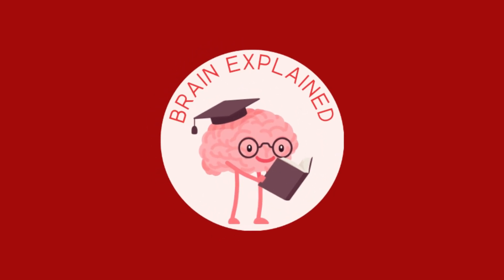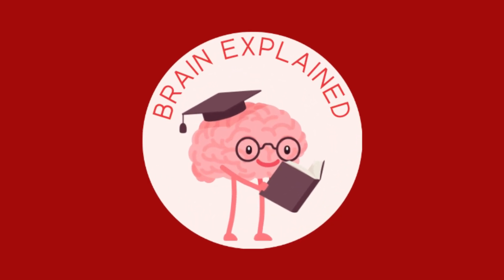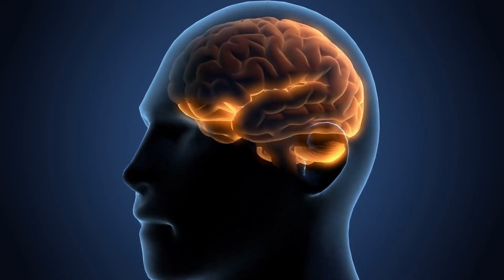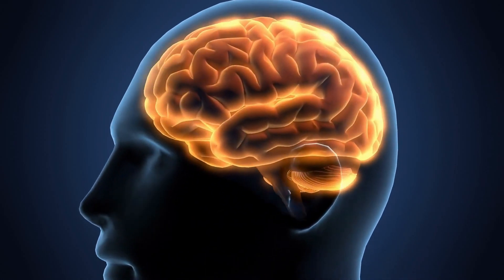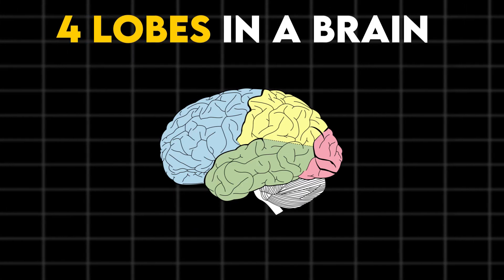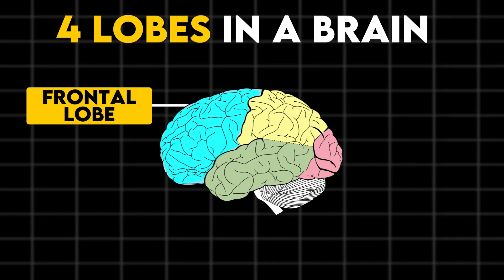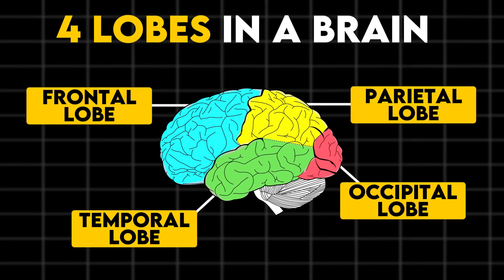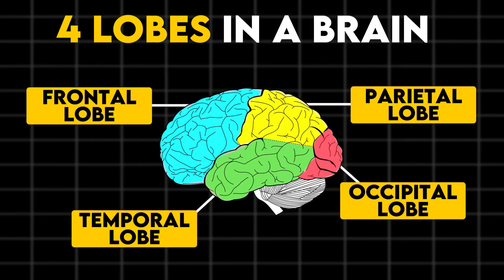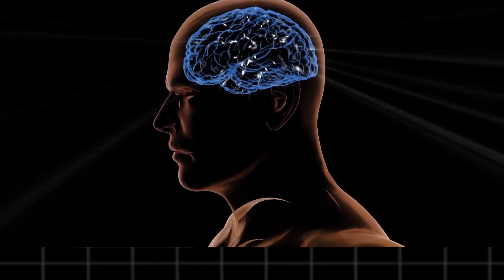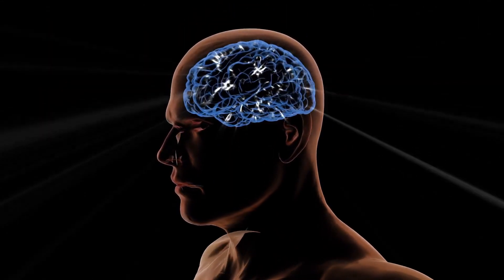Welcome to Brain Explained, where we talk about how the brain affects our daily life. This video will talk about the four lobes in our brain. The frontal, parietal, temporal, and occipital lobes are the four sections within the brain hemisphere. Specific functions are controlled by each lobe.